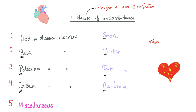Remember the classes of anti-arrhythmic medications? Class 1 is sodium channel blockers, 2 beta blockers, 3 potassium channel blockers, 4 calcium channel blockers. The mnemonic is: smoke better pot in California. Phenytoin is a class 1b anti-arrhythmic drug, just like lidocaine. Lidocaine is an anesthetic in the brain and also an anti-arrhythmic in the heart.